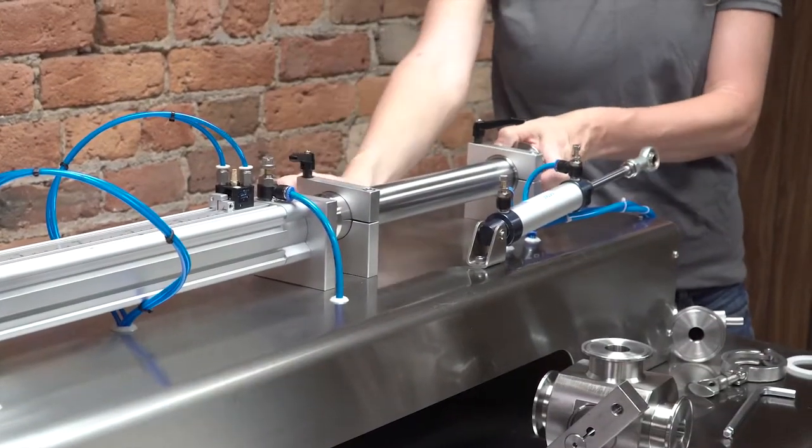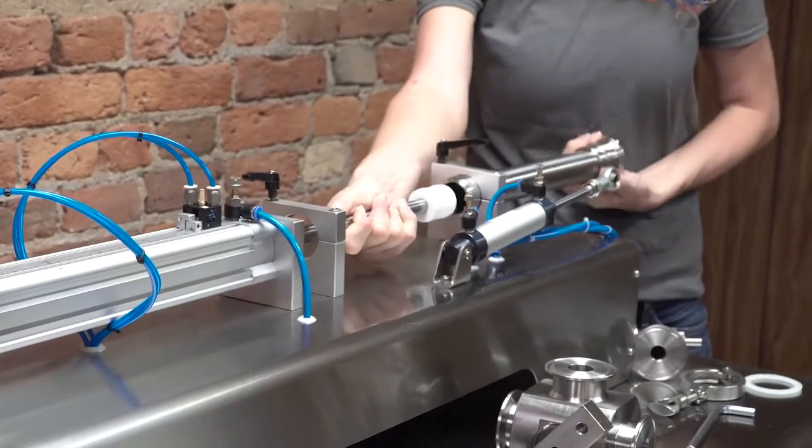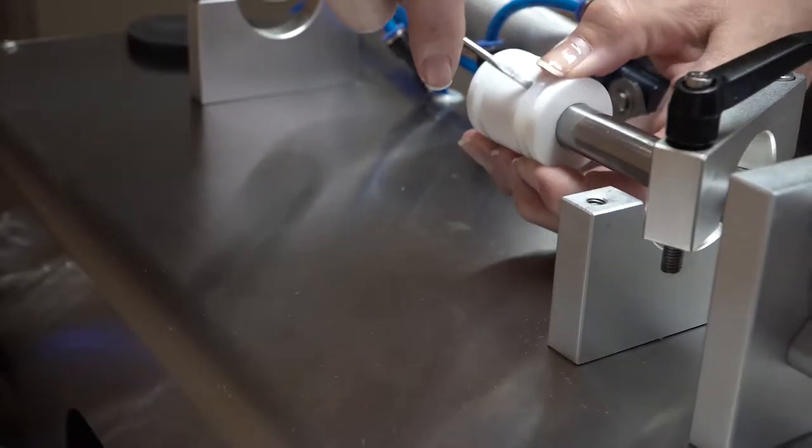Loosen both of the two ratchet style handles and remove the product barrel. Remove the piston o-rings.